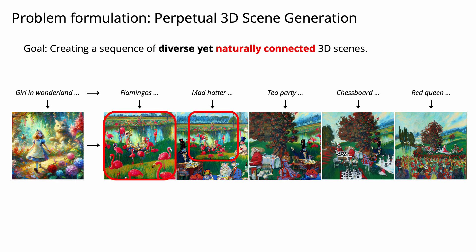In addition, we want our 3D scenes to be naturally connected. We want the flamingos to naturally appear in the next Mad Hatter scene, forming a connected 3D world.